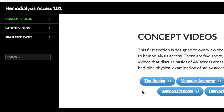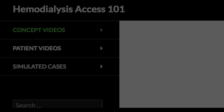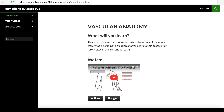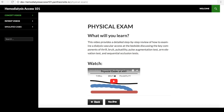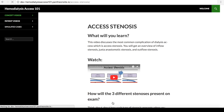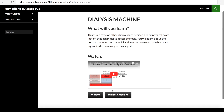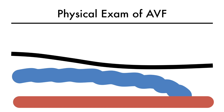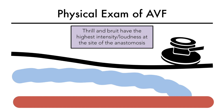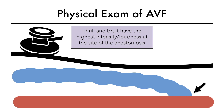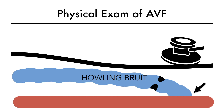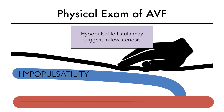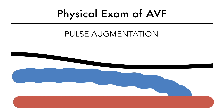This module is divided into three main sections. Section 1 is directed to concept learning. Using animated videos, we will discuss basics of AV-axis creation and functioning. This section will focus on how to examine an AV-axis at the bedside, and then how to apply these physical exam skills in diagnosing axis stenosis in the dialysis unit. Let's briefly review one such video to demonstrate.